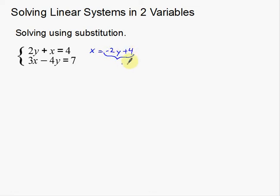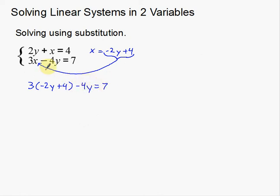Now I have a variable by itself and something to substitute in with. I'm going to take negative 2y plus 4 — since that's what x equals — and plug it into the second equation for x. That gives me: 3 times (negative 2y plus 4) minus 4y equals 7. I've got to distribute the 3 first, which gives negative 6y plus 12 minus 4y equals 7.